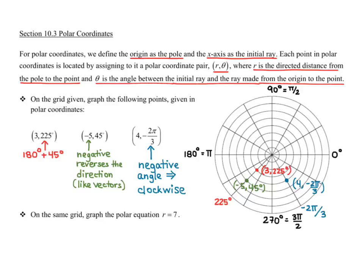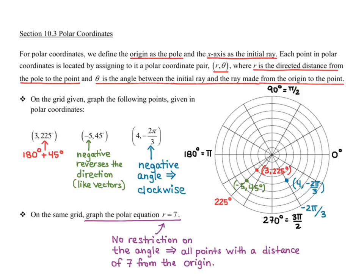Next, I want to graph the polar equation r = 7. Notice there's no restriction on the angle, meaning θ can be anything between 0 and 2π. All points with a distance of 7 from the origin form a circle with a radius of 7. Any time you have r equals a number, it will be a circle defined with that radius.